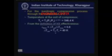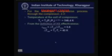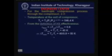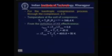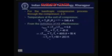Effectiveness equals delta T actual divided by delta T maximum, which is given as 0.8. Delta T actual is T2 minus T1 = 283 − 243 = 40 K. From this, delta T max = T4 − T1 = 40/0.8 = 50 K. Since T1 is known, T4 = T1 + 50 = 293 K.